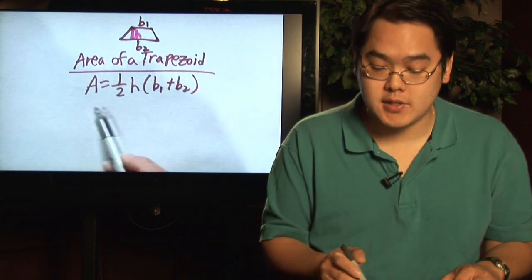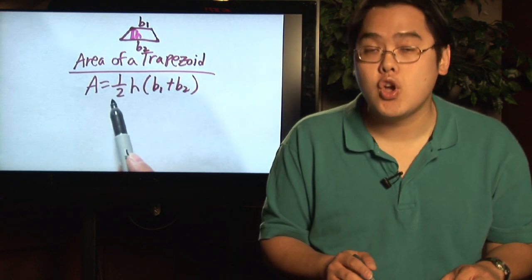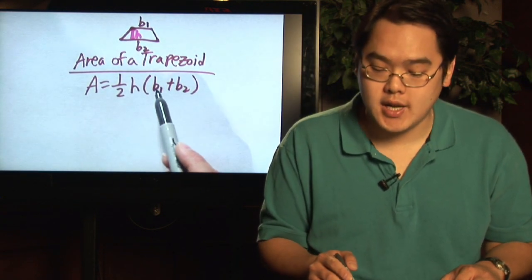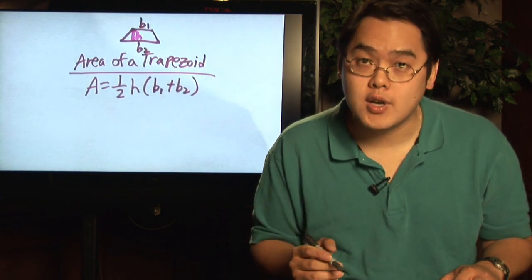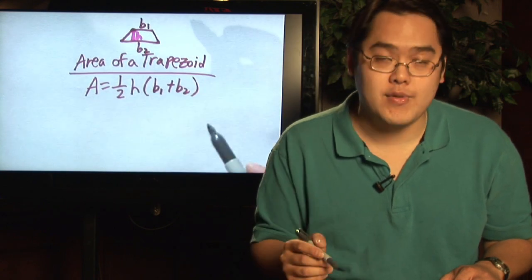Now the area of a trapezoid is of this formula: A equals one-half height times, and then in parentheses, B1 plus B2. So you have to add the two bases together and then multiply by half the height to get there.